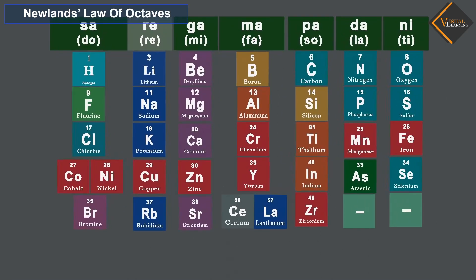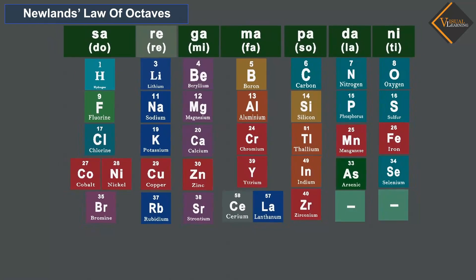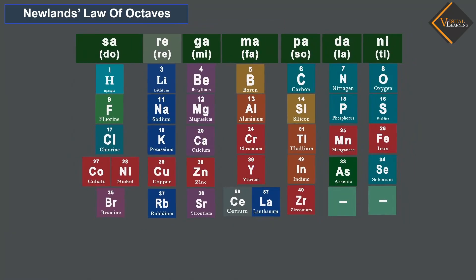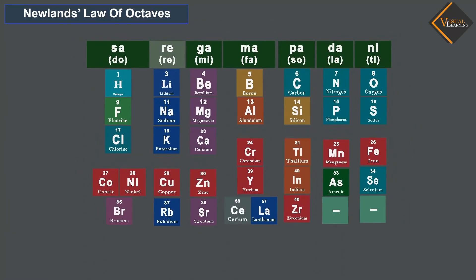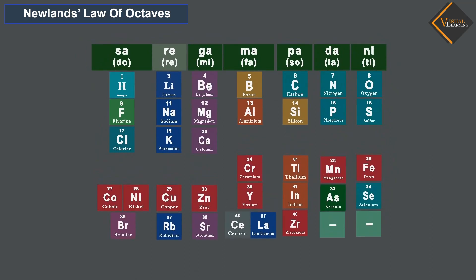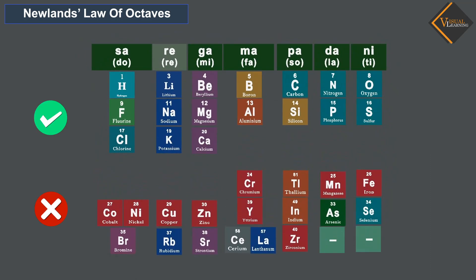It was found that the Law of Octaves was applicable only up to calcium, as after calcium every eighth element did not possess properties similar to that of the first. Newlands assumed that only 56 elements existed in nature and no more elements would be discovered in the future.